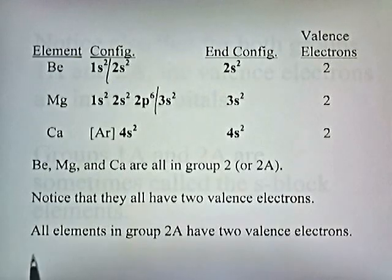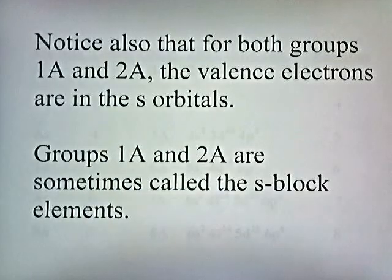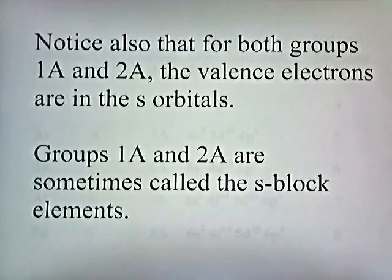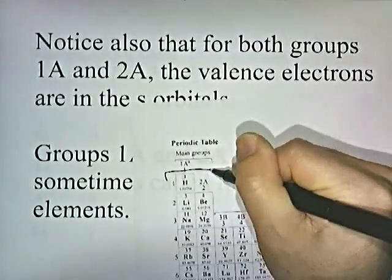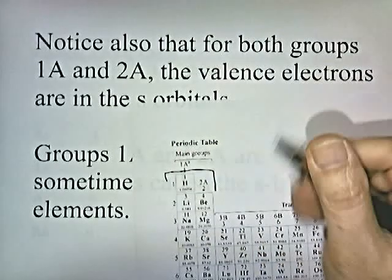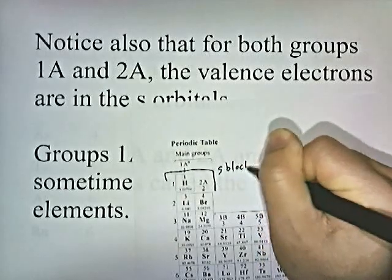All elements in group 2A have two valence electrons. Notice that for both groups 1A and 2A, the valence electrons are in the s orbitals. So groups 1A and 2A are sometimes called the s-block elements.